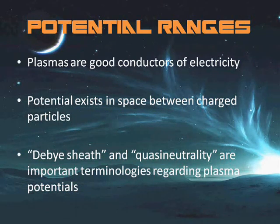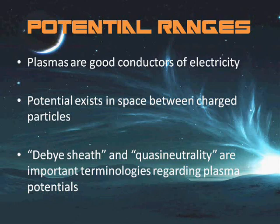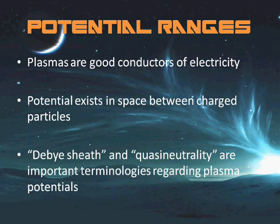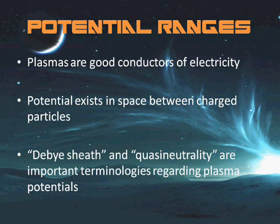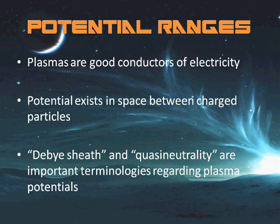The Debye length is the distance over which significant charge separation can occur. The good electrical conductivity of plasma makes their electric fields very small. This results in an important concept of quasi-neutrality, which says that the density of negative charges is approximately equal to the density of positive charges over large volumes of the plasma. But on the scale of the Debye length, there can be a charge imbalance. In this special case, double layers are formed, and the charge separation can extend some tens of Debye lengths.